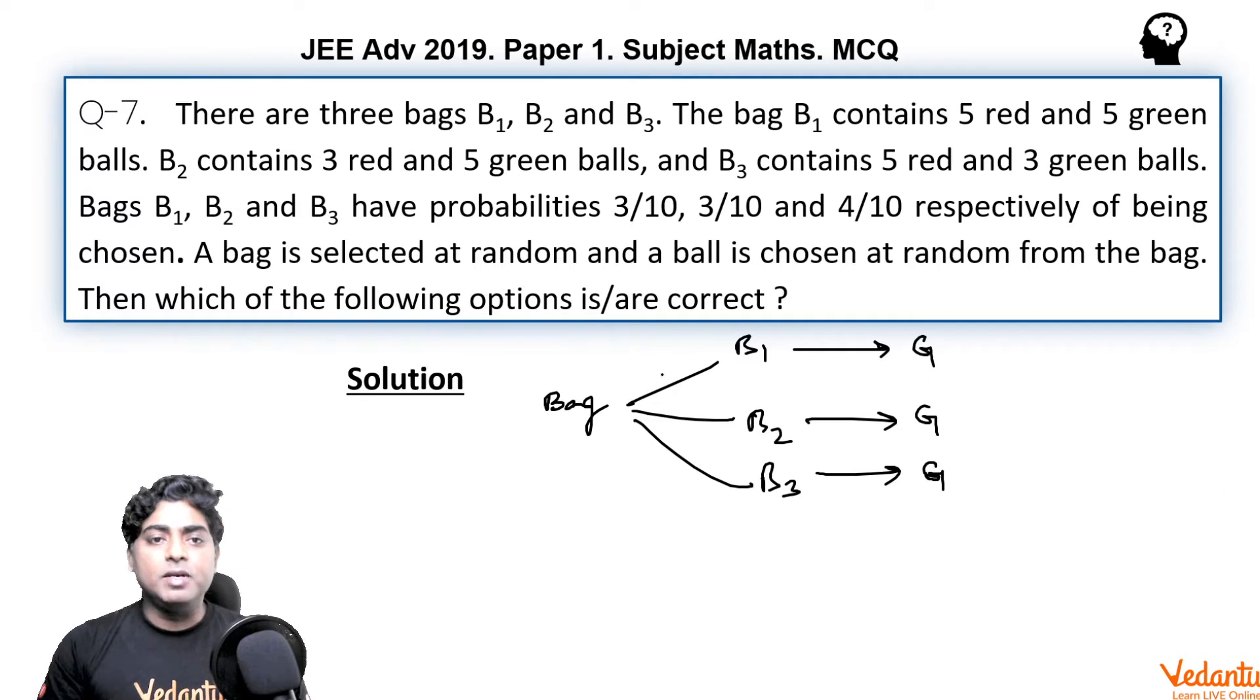G represents the event that the green ball is taken from the bag. Bag B1 to be chosen probability is 3 by 10. Bag B2 again 3 by 10. And bag B3 it was 4 by 10. From bag B1, if bag B1 was chosen, there were 5 green out of total 10 balls. So it must be 5 by 10. For a green ball to be taken from bag 2, number of green balls is 5, total is 8. So it must be 5 by 8. And from B3, 3 green balls were there, 3 by 8.